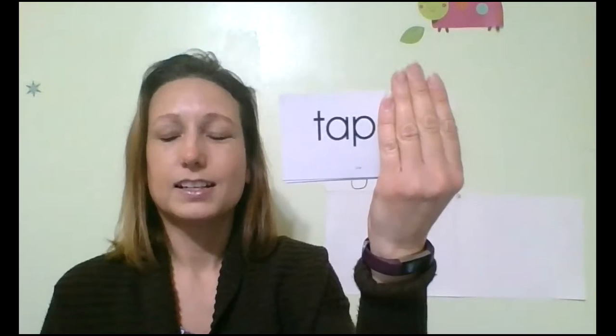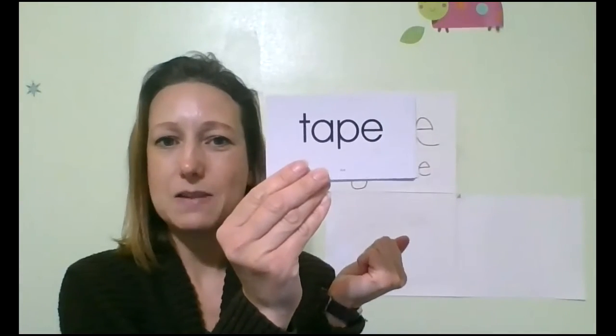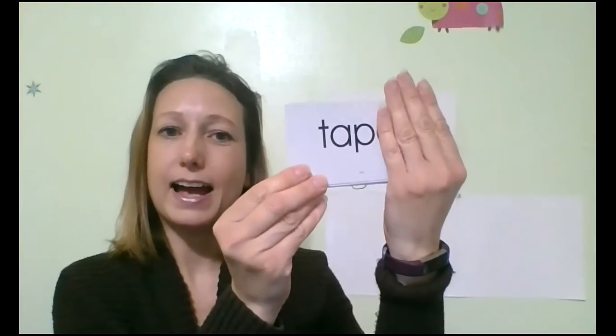Tape. Because A consonant E says A. If I take that E off, now it has the short A. T-A-P, tap. Tape. That A changes from A to A.